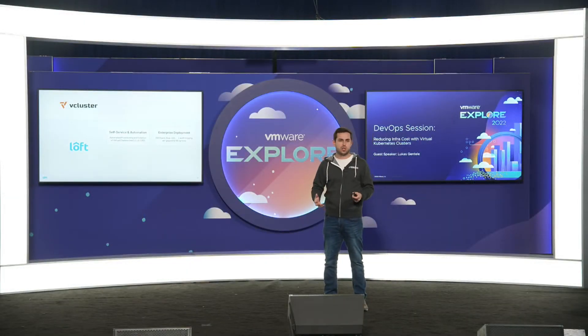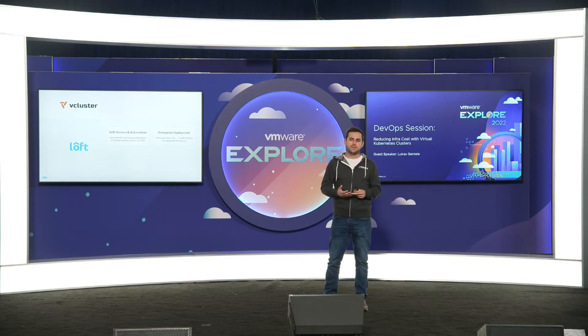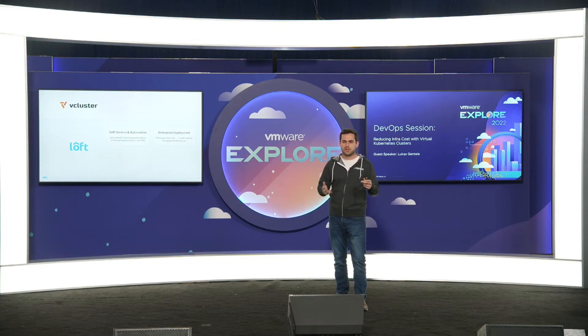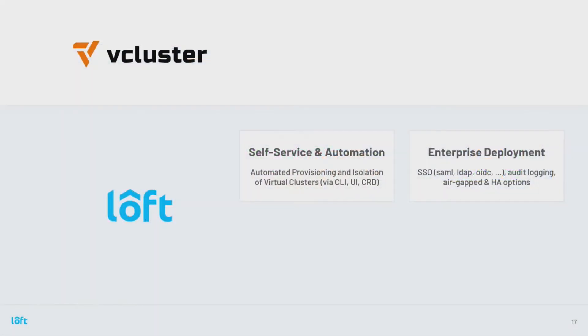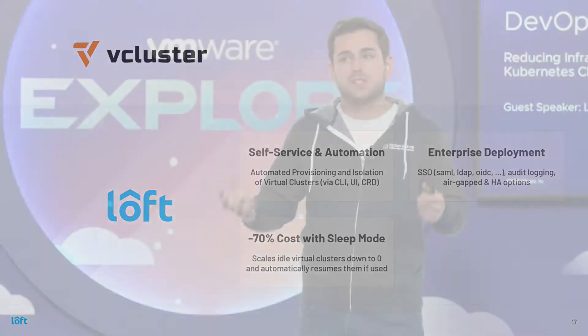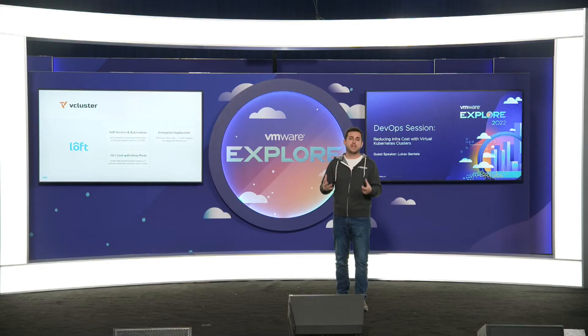Loft adds enterprise deployment capabilities like high availability mode, and integrates with your single sign-on — whether Active Directory, LDAP, or SAML — so you can securely authenticate with your virtual clusters. We also have a cost-saving feature in Loft that automatically pauses virtual clusters when they're not being used, which saves a ton of money. Engineers need sleep — there's a weekend, there may be long calls — throughout that time engineers don't need these Kubernetes clusters. Because they're virtual clusters now, they're super lightweight and can be paused and resumed — that's the sleep mode feature.